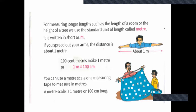Centimeters are used with a scale for things like your book, pen, or laptop. But bigger things, you can only measure in meters, written in short as m. If you spread out your arms, the distance is about 1 meter — not exactly, but approximately 1 meter.